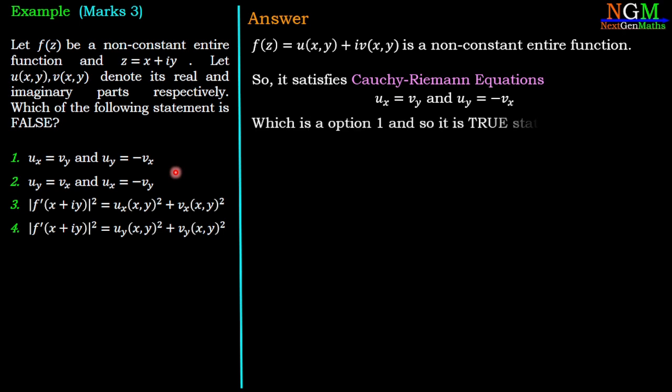Which is option number one and it is a true statement. But we are interested in the false statement. Option number two is the false statement which is u_y = v_x and u_x = -v_y. So option number two is the correct answer.